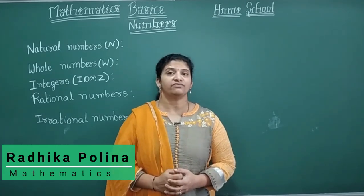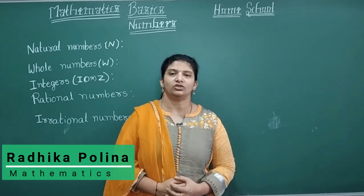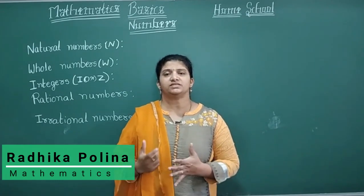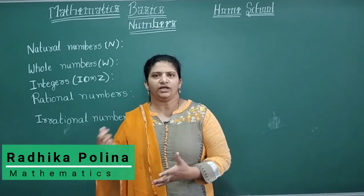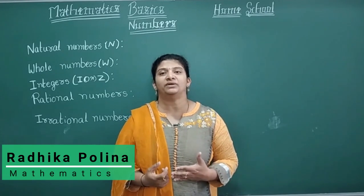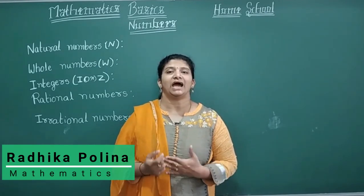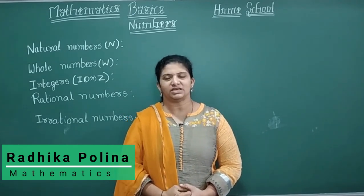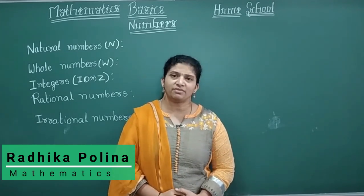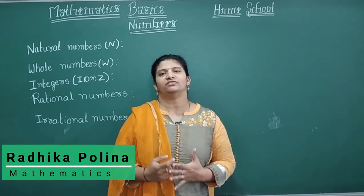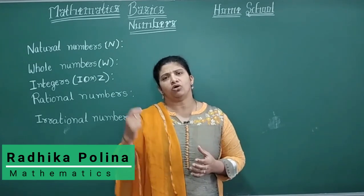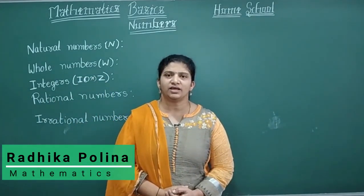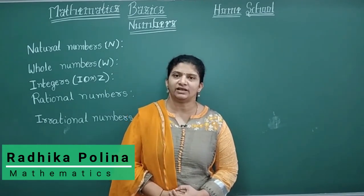Now let's learn about how numbers are classified into types. Let's start counting: one, two, three, four, five, six, seven, eight. This way of counting numbers — we start counting from one — these are called counting numbers.